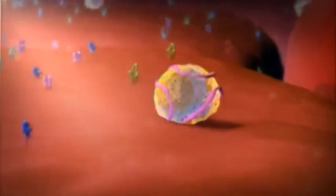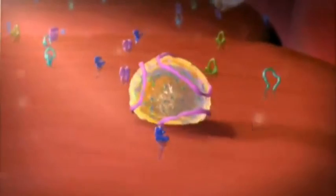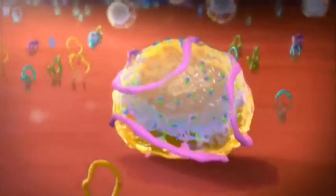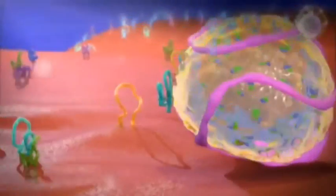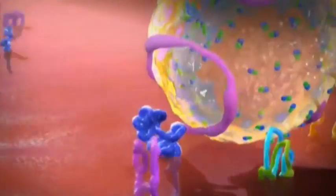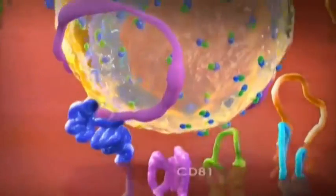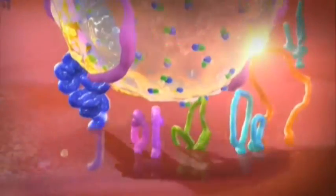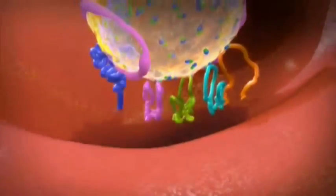In the body, HCV targets liver cells, hepatocytes. This is because hepatitis C viral particles have proteins on their surface that bind to receptors on the surface of liver cells such as the LDL receptor CD81, scavenger receptor class B type 1 or SRB1, Claudin-1, and Occludin.